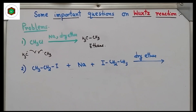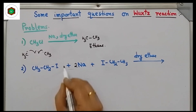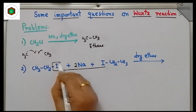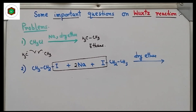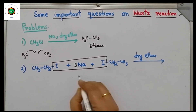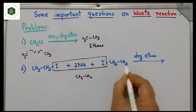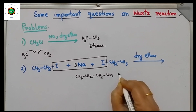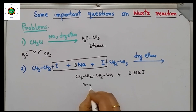When iodoethane is treated with sodium metal in dry ether, two moles of iodoethane react. Removal of NaI takes place and we get CH₃CH₂CH₂CH₃ — normal butane — plus 2 NaI.